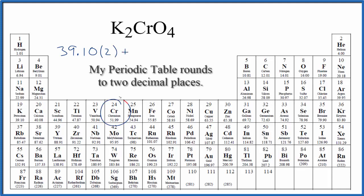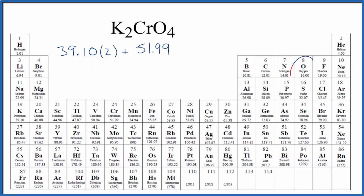Chromium, that's right here, that's 51.99 grams per mole, and we only have one chromium atom. Oxygen, that's 16.00 grams per mole, and we have four oxygen atoms.